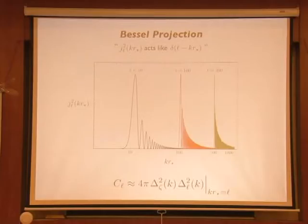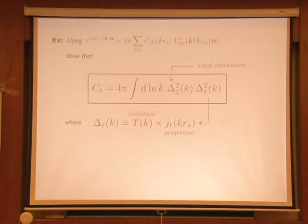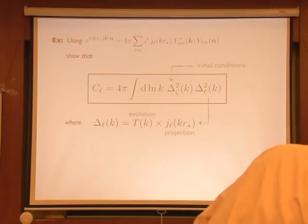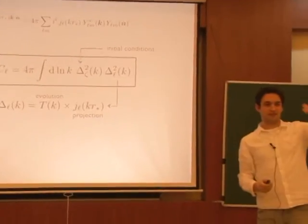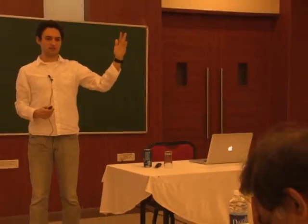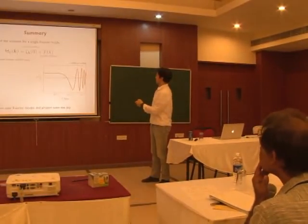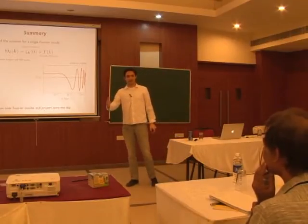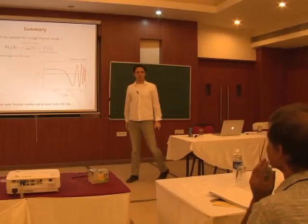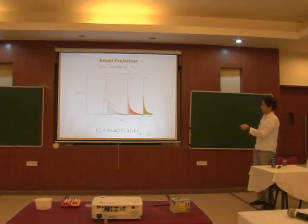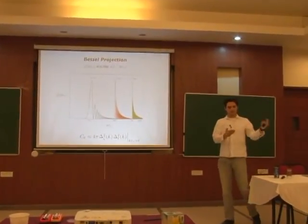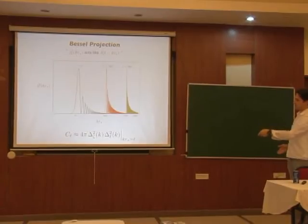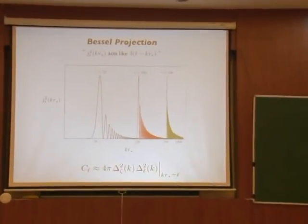The transfer function was encoding the fact that different wavelengths oscillate with different frequencies — the frequency of a plane wave depends on K, it's sound speed times K. Small wavelengths will oscillate faster; they go through more phases of oscillation before being captured. That's why the transfer function shown here, plotted as a function of K, comes from having different plane waves oscillating by different amounts and then taking a snapshot. So the transfer function encodes the oscillation history, and the projection is just a delta function selecting one K-mode for a given L-mode.